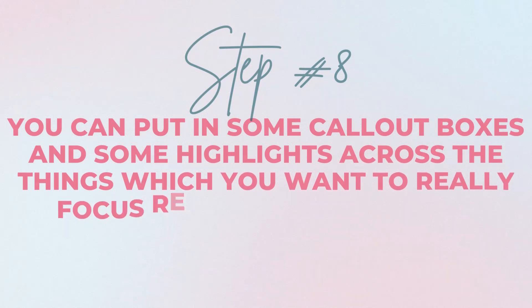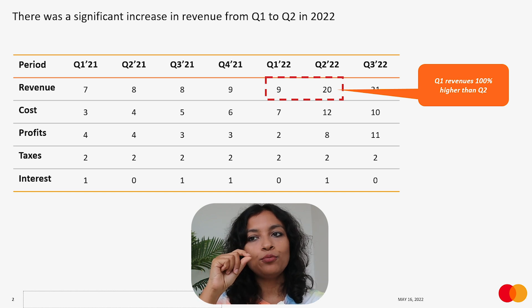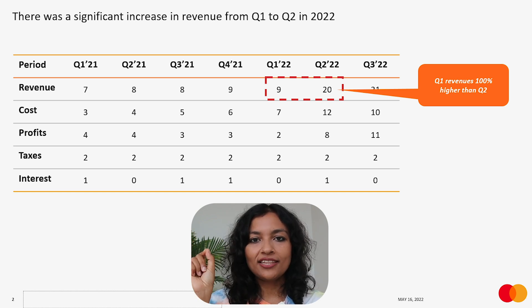Point number eight: if you have a lot of things in one slide and it's becoming too cluttered, you can put in some call-out boxes and highlights across the things you really want to focus the reader's attention on. For example, say you have to put in a table with a lot of numbers and the main message is that revenues in Q1 were more than Q2. You just put a red dotted box outside the revenues for Q1 and Q2, and maybe add a call-out box mentioning that revenue for Q1 was greater than Q2. This tells the reader: there's a lot going on in this slide, but what you need to focus on is this specific message. Nothing else matters.